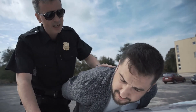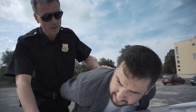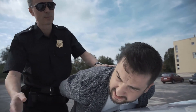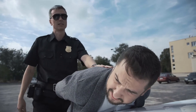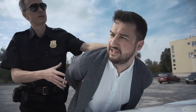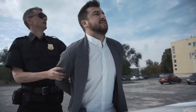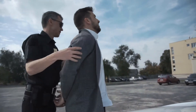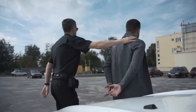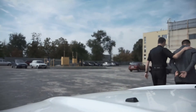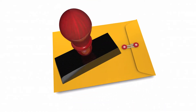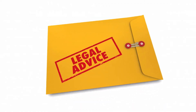If a tenant is withholding rent because an apartment is uninhabitable due to a repair, provide photographic evidence. If a landlord has refused to provide adequate security measures, get police reports about crime in the neighborhood or bring witnesses from the properties.